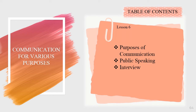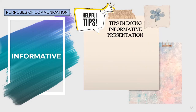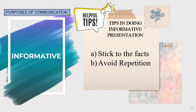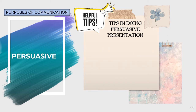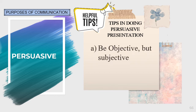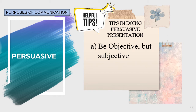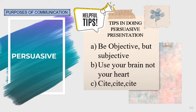We are now in Lesson 6: Communication for Various Purposes. Purposes of communication: the first is informative — the main purpose is to simply convey information factually. Tips for informative presentations: stick to the facts, avoid repetition, and make it clear. Persuasive — in writing, it is pushing across an idea and convincing people or readers to support the idea you want to convey. Tips for persuasive presentations: be objective but subjective, use your brain not your heart, and always cite sources.